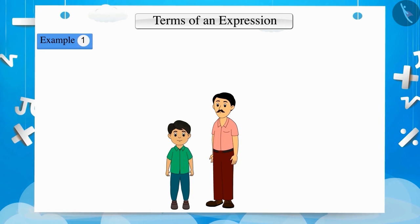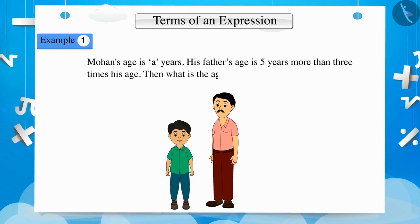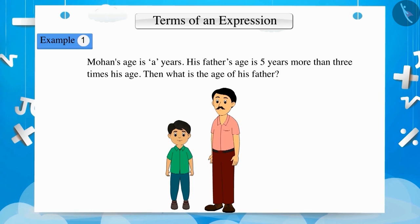Mohan's age is A years. His father's age is 5 years more than 3 times his age. Then what is his father's age? Let's form an expression that represents the age of Mohan's father.